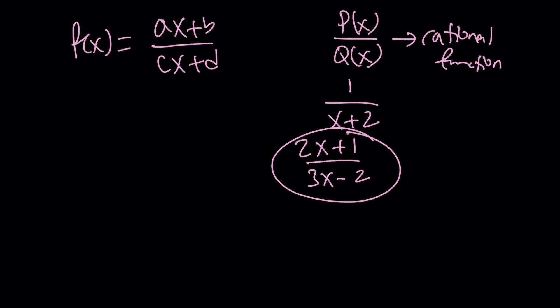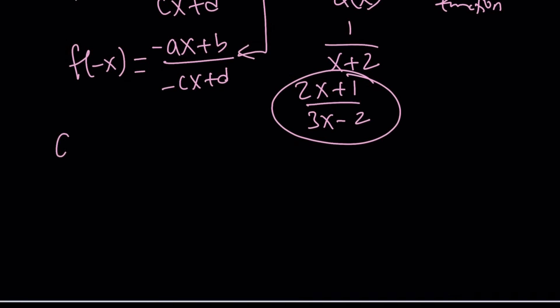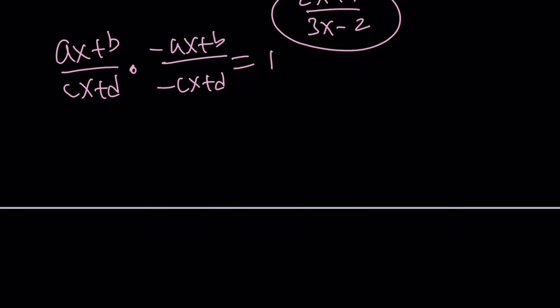In this case, I'd like to test this. What is f of negative x? It'll be a times negative x, which is negative ax plus b, divided by c times negative x, which is negative cx plus d. Now we want the product of these two things to be 1. So ax plus b over cx plus d times negative ax plus b over negative cx plus d equals 1. Is that possible at all? Multiplying this might seem difficult, but don't worry. By using difference of two squares, we can write this as follows.